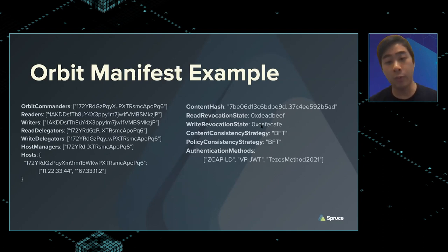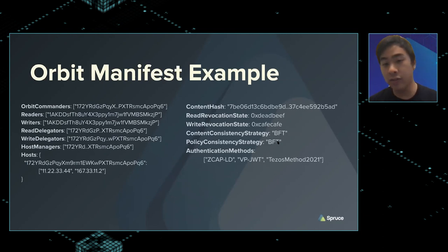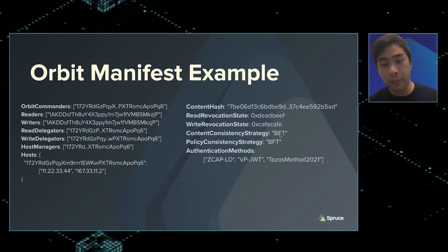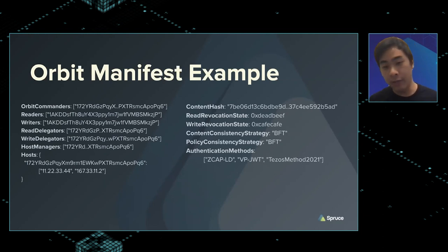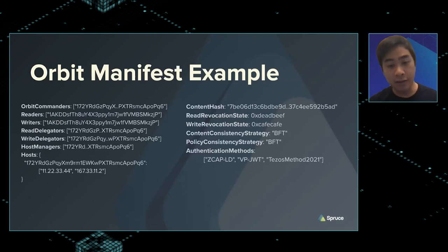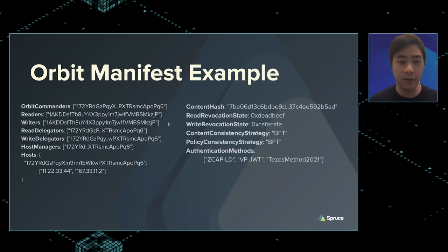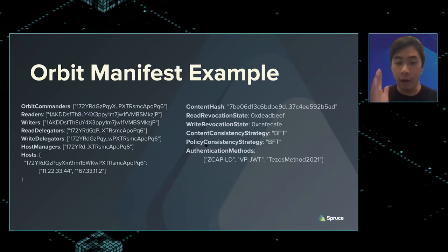We need to maintain which capabilities we've issued are valid, and we might have consistency strategies. If you don't want to wait for a Merkle root update and want a faster system — maybe Byzantine fault tolerant across all the hosts in the orbit — that can be specified with the policy. We separate content and policy: policy changes like a large number of readers shouldn't be stored in the manifest because it's expensive on a layer-one blockchain, and you might want a different consistency strategy for that data.